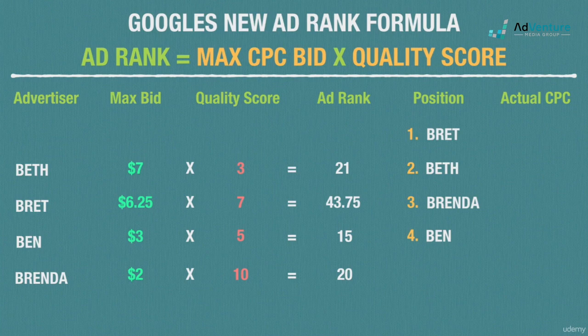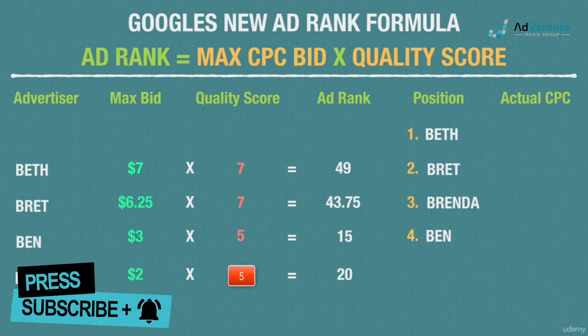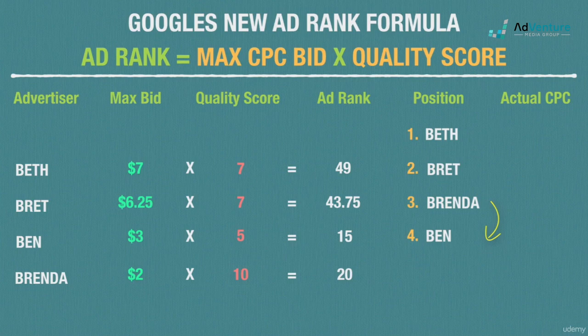This shows how crucial quality scores are, even before getting into actual cost per click. If Beth improved her quality score from 3 to 7, her ad rank would jump from 21 to 49, winning her the top spot without increasing her bid at all. And if Brenda let her quality score slip from 10 to 5, her ad rank would drop to 10 and she'd lose her spot to Ben.